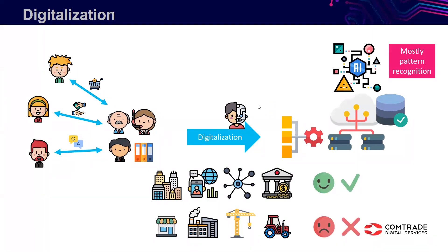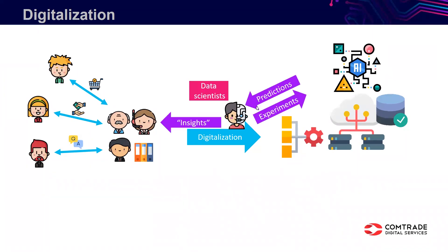This model of data science — the work of the data scientists was that they did experiments, built models that made predictions, and then more often than not had to gather insights and communicate them to the business people. So basically the work was really not end-to-end in terms of machines, but very much dependent on human interaction.